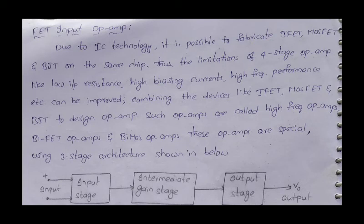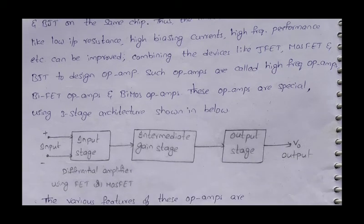By combining JFET, MOSFET and BJT on the same chip, the limitations of a conventional op-amp such as low input resistance, high biasing currents, and poor high-frequency performance can be improved. Combining these devices to design op-amps produces what are called high-frequency operational amplifiers, BiJFET op-amps and BiMOS op-amps.